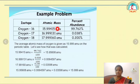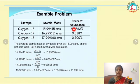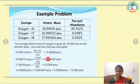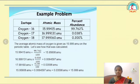For oxygen-16, the atomic mass is 15.99 amu and the percentage abundance is 99.76. Since we say percentage it is out of 100, so we divide by 100, which gives us 15.95. Likewise, if we do this for oxygen-17 and oxygen-18, we get three values, and we add all three values to get the atomic mass of oxygen.